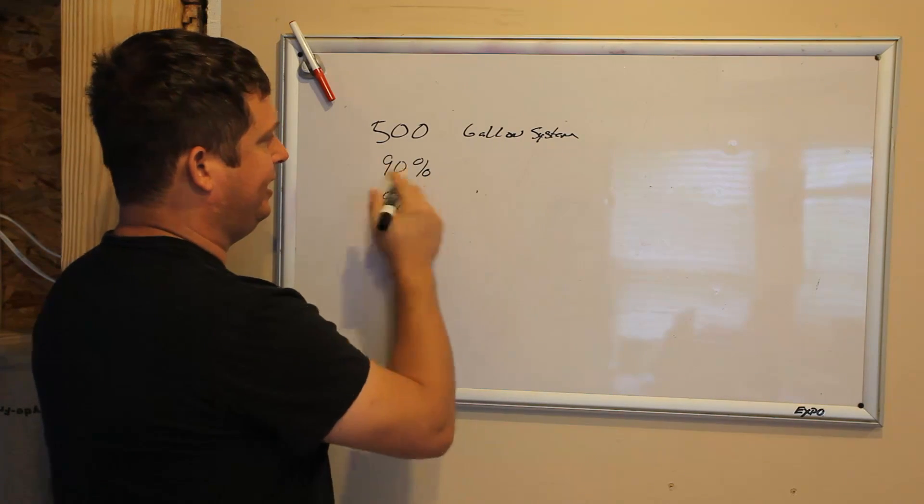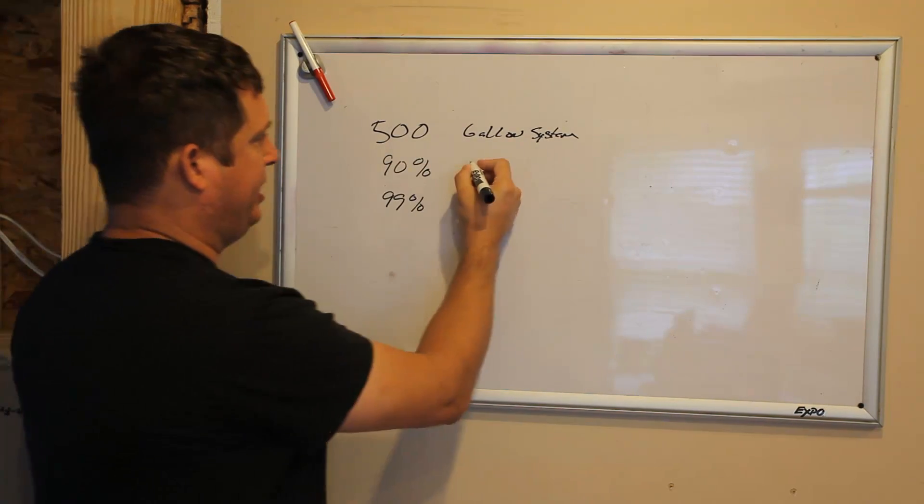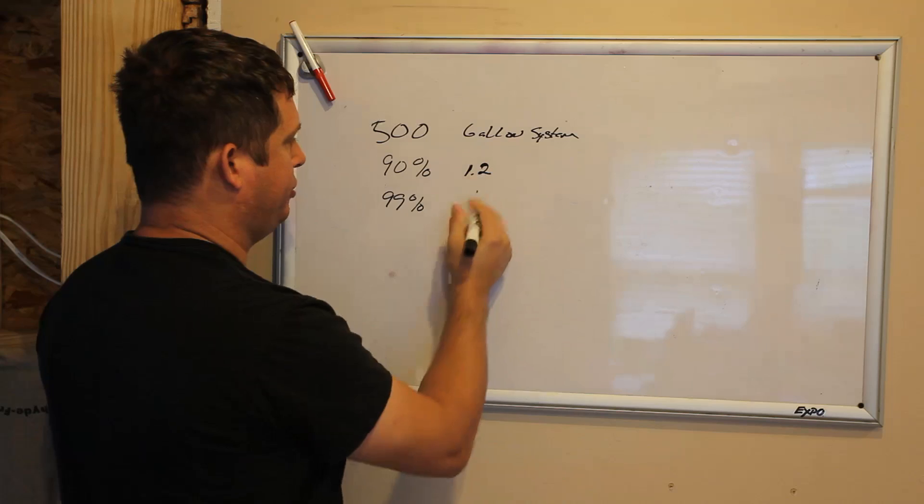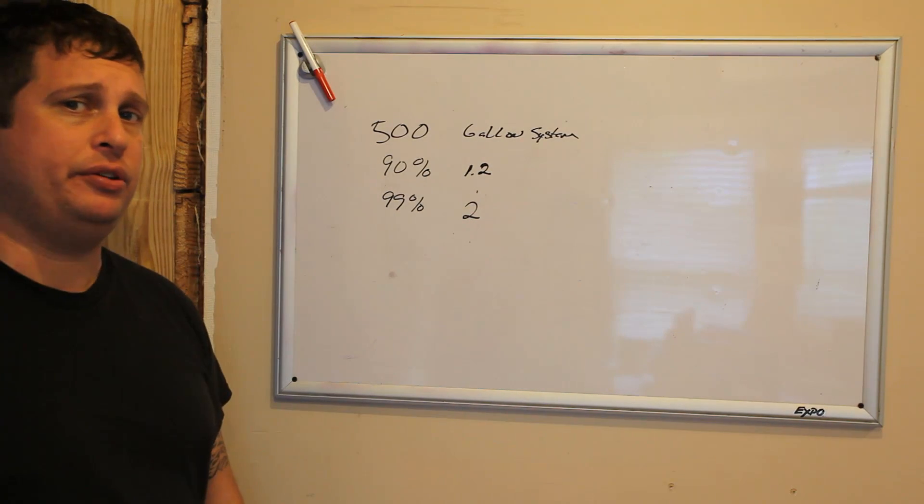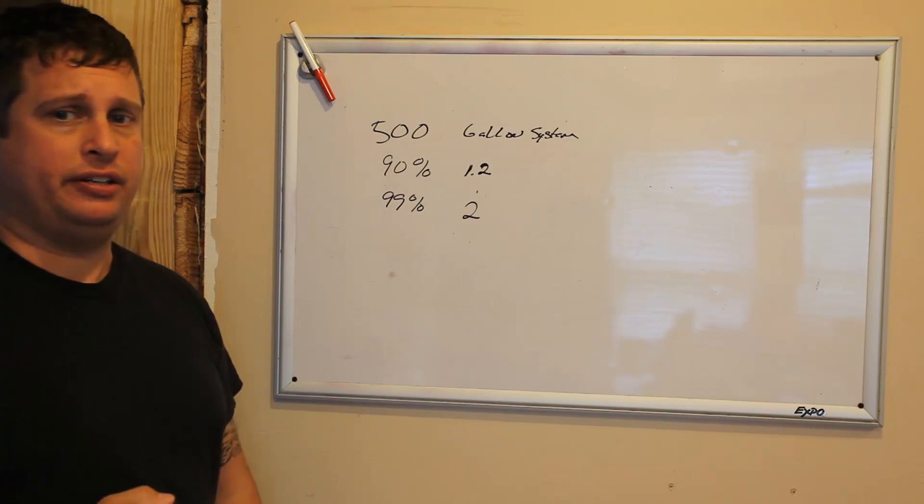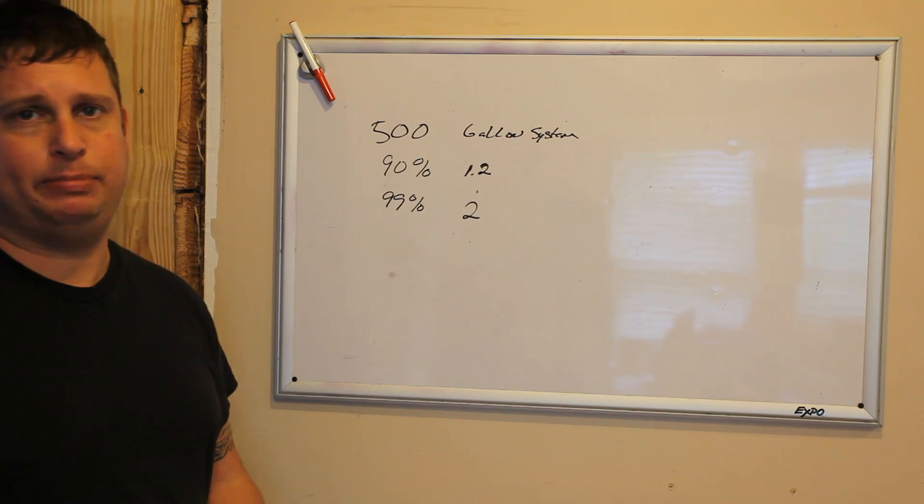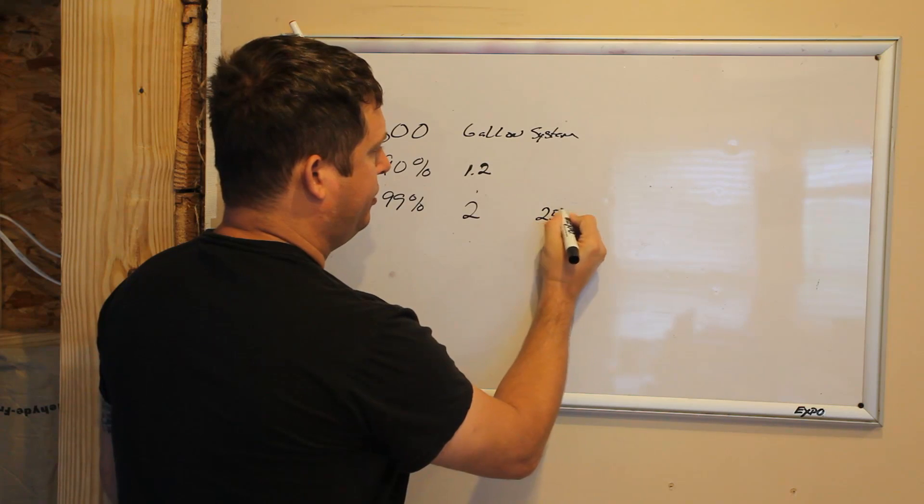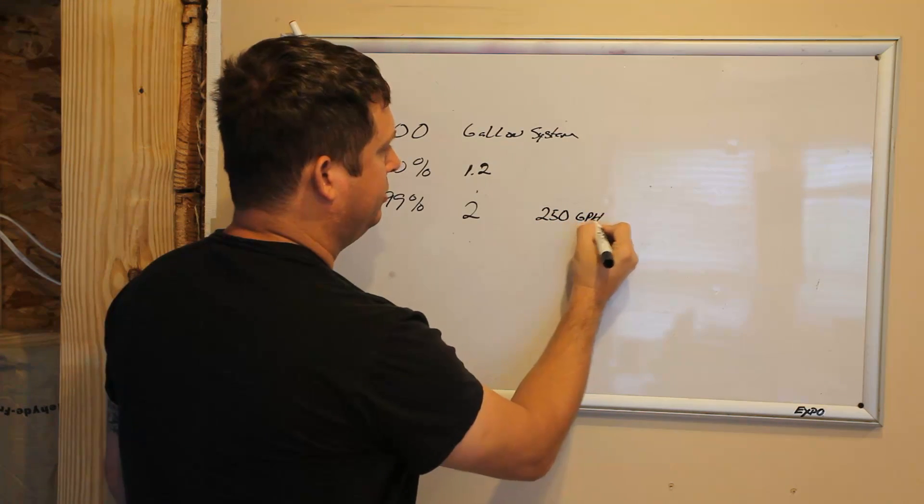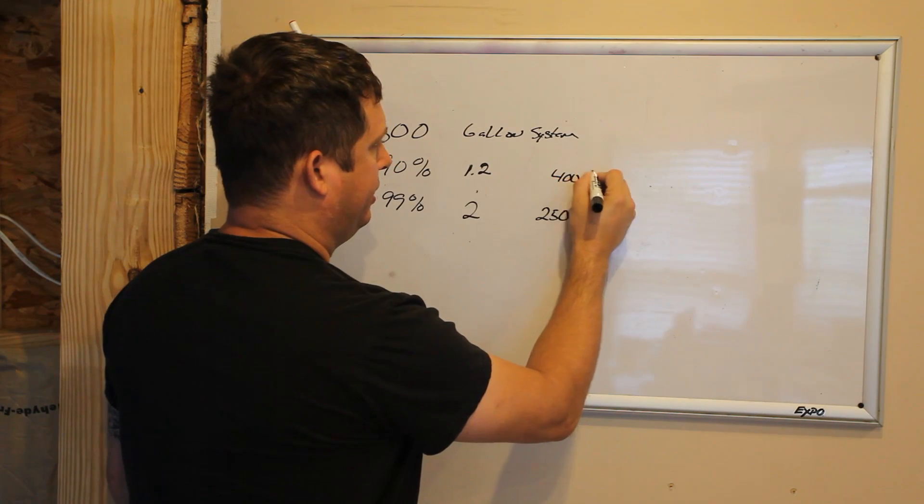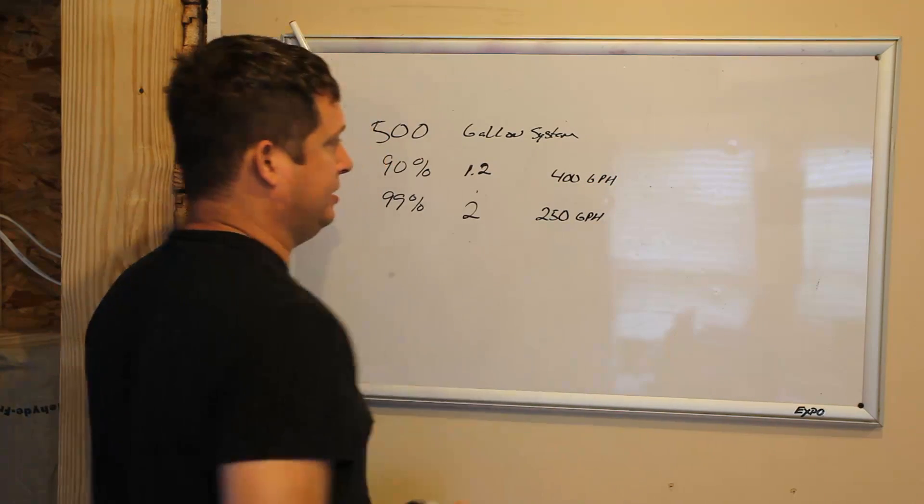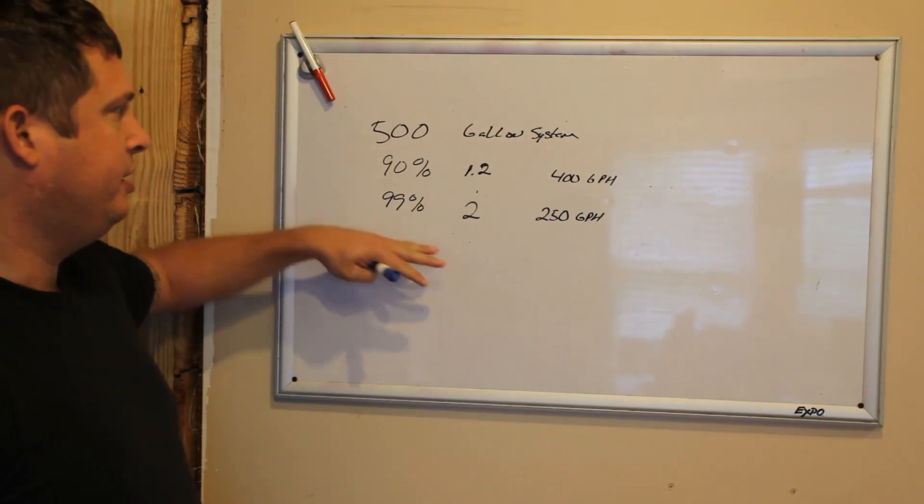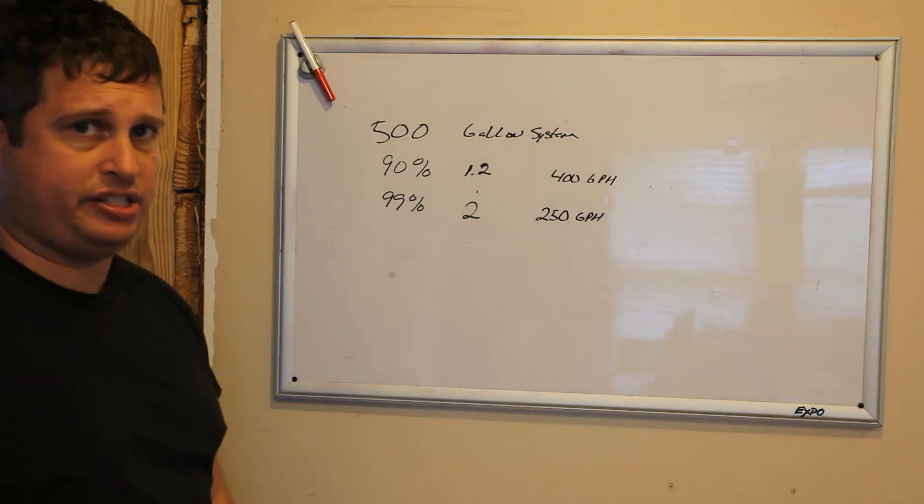So the easiest way to get this is to divide 500 by 1.2 and 2, and that will give you the range of what your flow per hour needs to be. So if I flow 250 gallons per hour to 400 gallons per hour in my system, I will achieve a 90 to 99% sterilization rate.